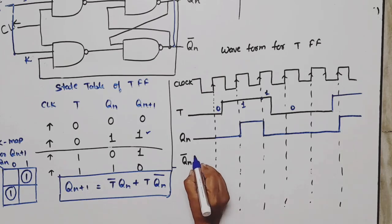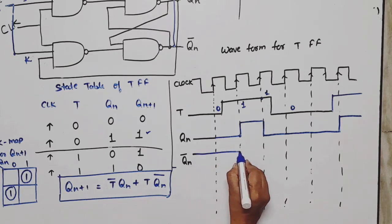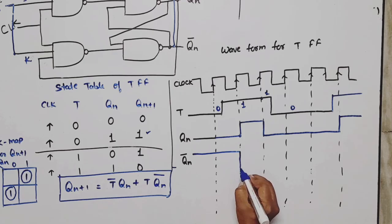Now QN bar is just opposite. If QN was zero, then QN bar is high. If QN was high, then QN bar is low. So just draw the opposite. There is no confusion.